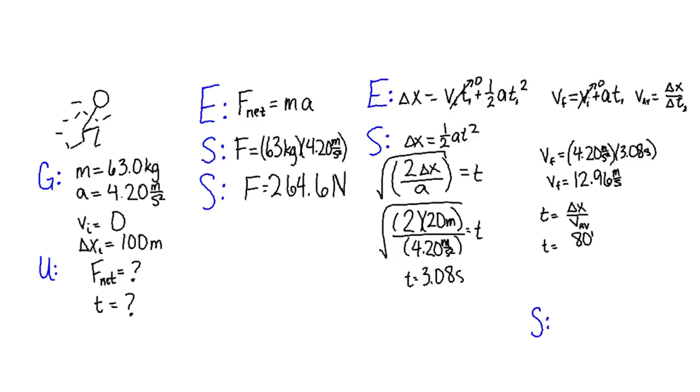80 meters divided by 12.96 meters per second. Put this into your handy-dandy calculator, and you get that the time for the last 80 is 6.17 seconds.